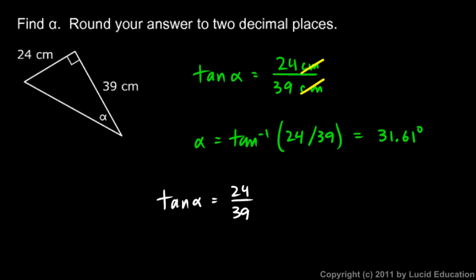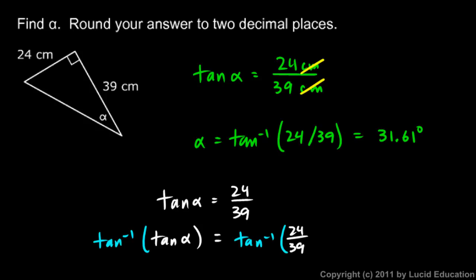What I'm going to do is apply the inverse tangent to each side. The left side becomes inverse tangent of tangent of alpha, and the right side becomes inverse tangent of 24 over 39.